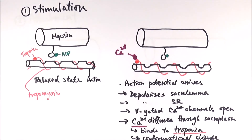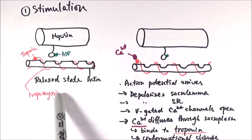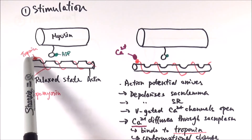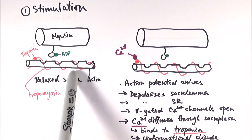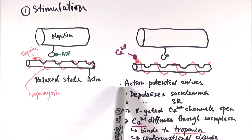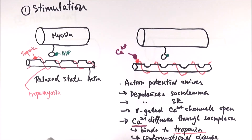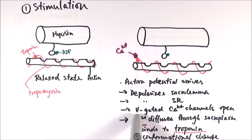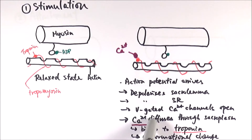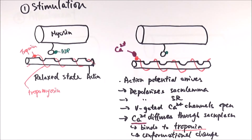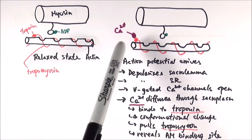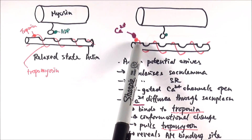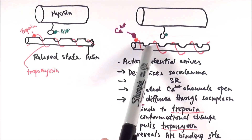Let's have a summary of the sliding filament model. This is the relaxed state of the muscle. We've got the myosin with the myosin head attached to ADP, and the actin filament with the troponin holding the tropomyosin in place, covering the actin-myosin binding site. When the action potential arrives, it will depolarise the sarcolemma and also the sarcoplasmic reticulum. The voltage-gated calcium channels on the sarcoplasmic reticulum open, and calcium diffuses through the sarcoplasm. Calcium ions bind to troponin, causing a conformational change — a shape change — pulling the tropomyosin away from the actin-myosin binding site and revealing it.